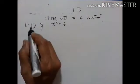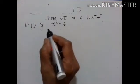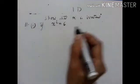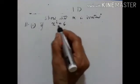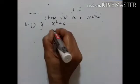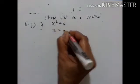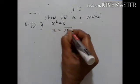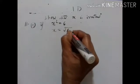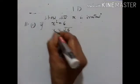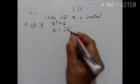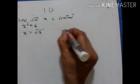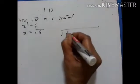Exercise 1D, 11th problem: Show that x is irrational if x squared is equal to 6. So x is equal to square root of 6. Taking the square root on both sides, let us take the square root of 6.